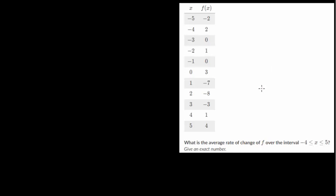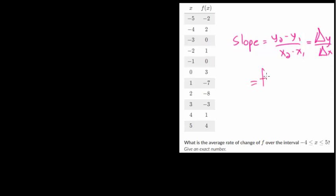Let's do a problem with the table. Even though we don't have the picture, all we really need are the two points and then we can calculate the slope of the line between them. We'll use the slope formula: y2 minus y1 over x2 minus x1 — that's the change in y over change in x. You might also see it in function notation as f(x2) minus f(x1) divided by x2 minus x1; it's the same thing.